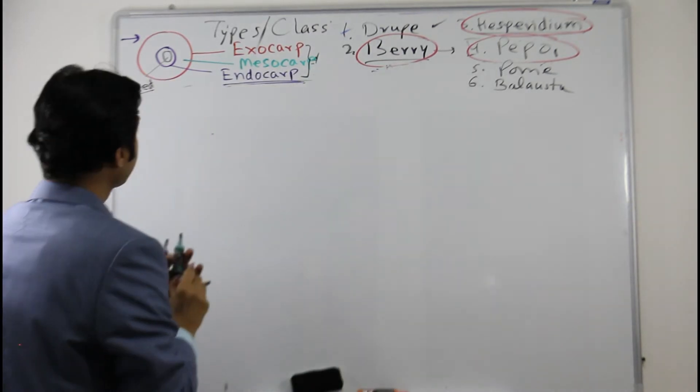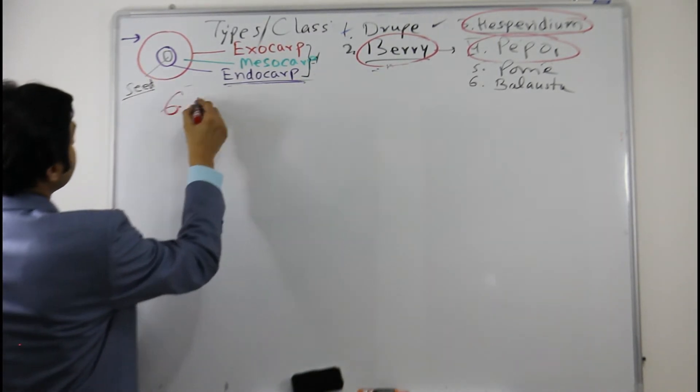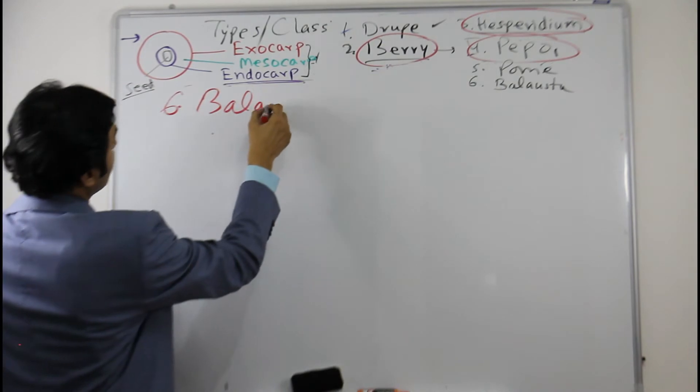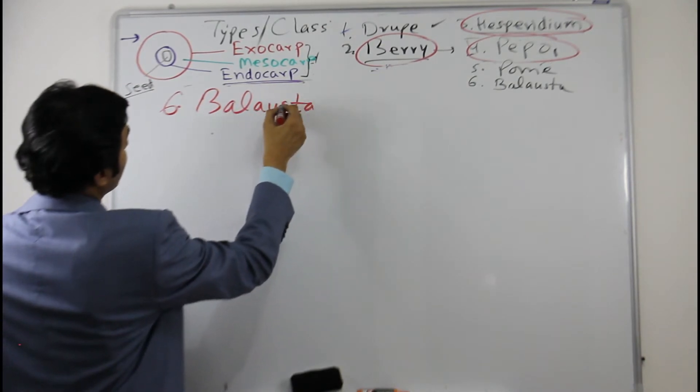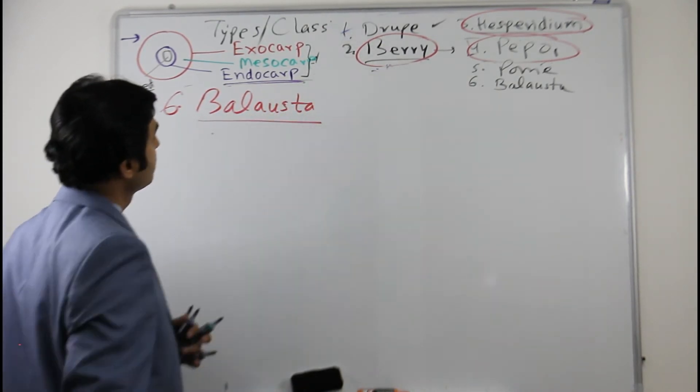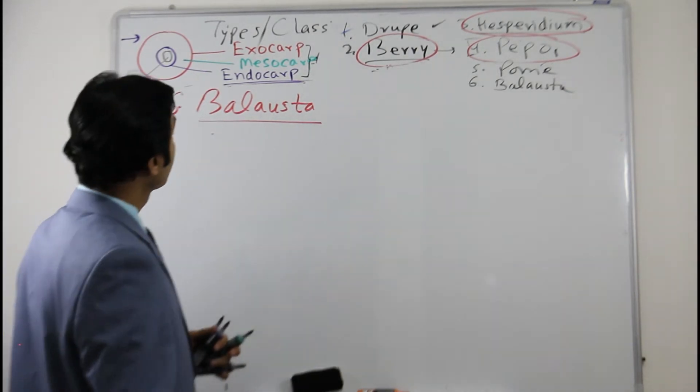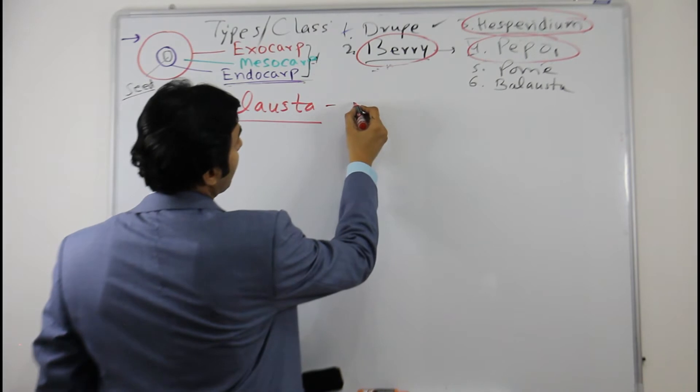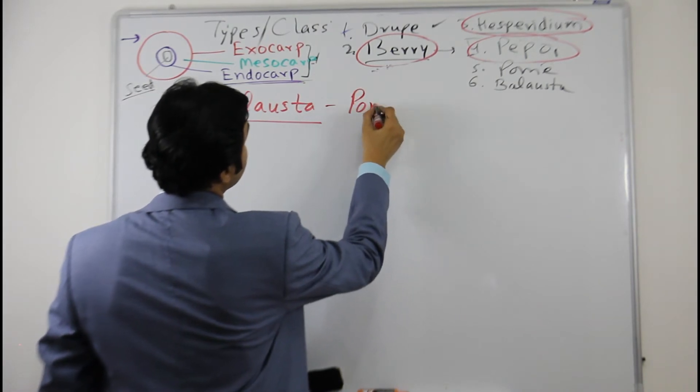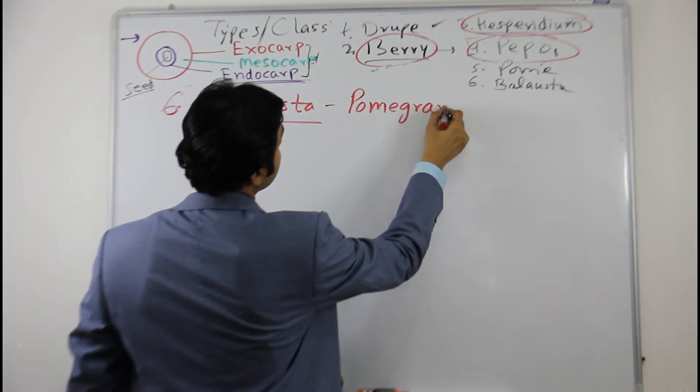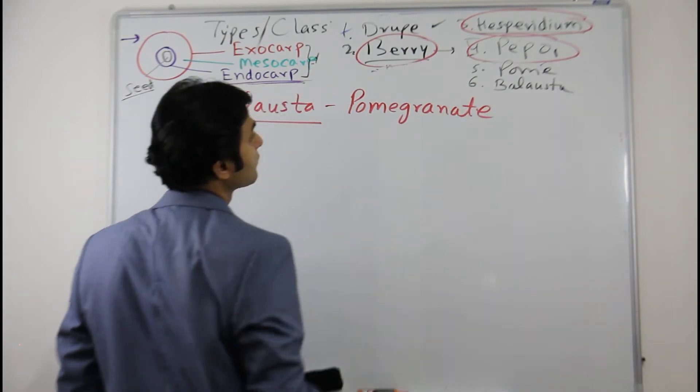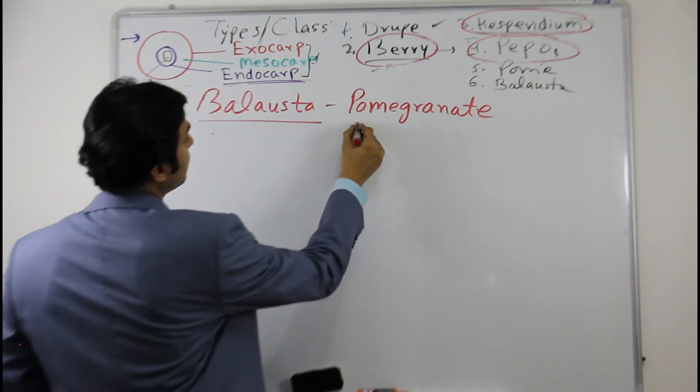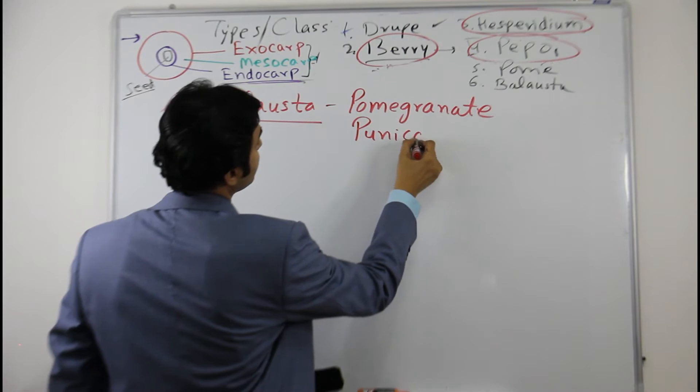Okay, number six is balusta. Balusta is a unique type of fruit, and the representative fruit type for you is pomegranate, or Punica granatum, the scientific name.